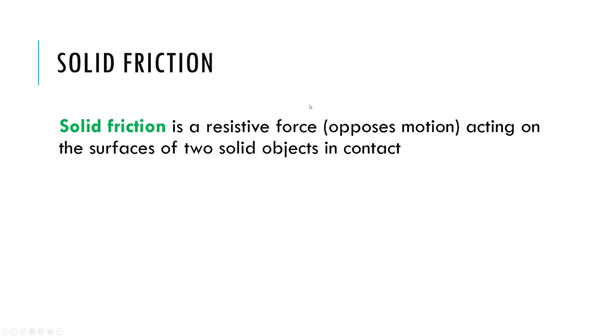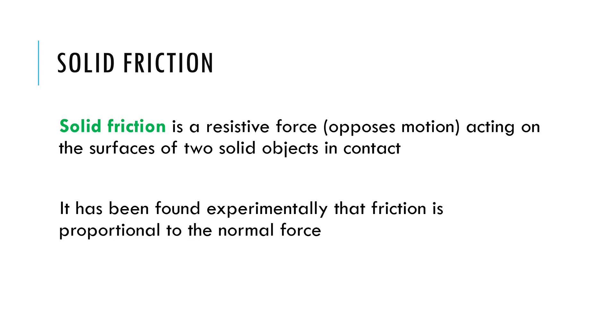So to define it, solid friction is a resistive force between surfaces of two solid objects that are in contact. It is an empirical thing. Everything we know about friction comes from experiment and study, rather than more intuitive or deep laws of physics. This is something that we really just kind of figure out experimentally. And what we find is friction, the force, is proportional to the normal force.